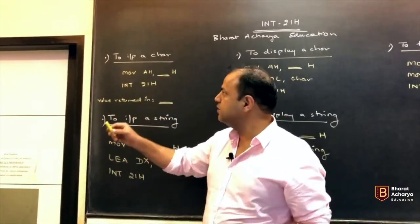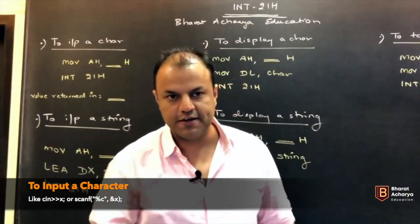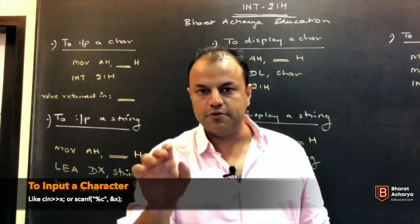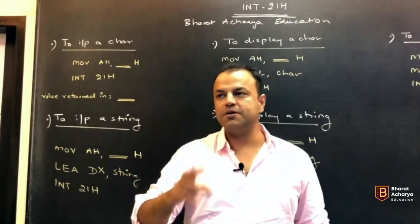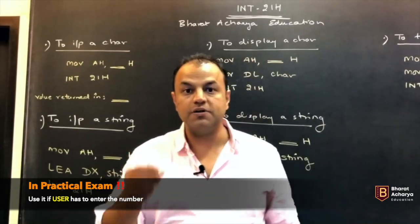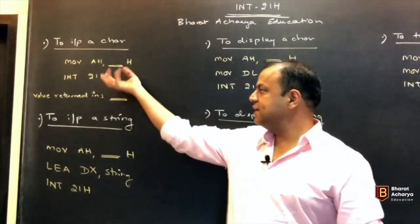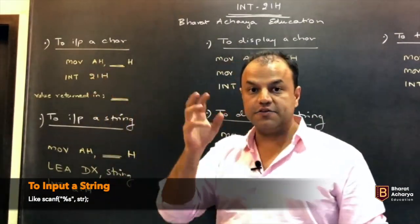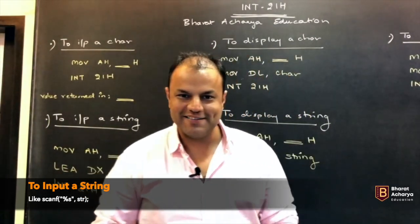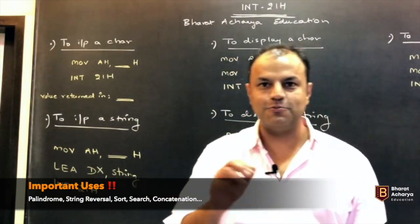So the ones that are used regularly are to input a character. Like in a C program, when you type CIN, what happens in that command CIN, suppose you write CIN and X, and when you execute that line, the cursor is blinking and whatever the user enters comes into that variable X. Similarly, to input a character from the user, if you want the user to enter numbers for you, like write a program to add two numbers, but the number should be taken in from the user. You need to use INT21.